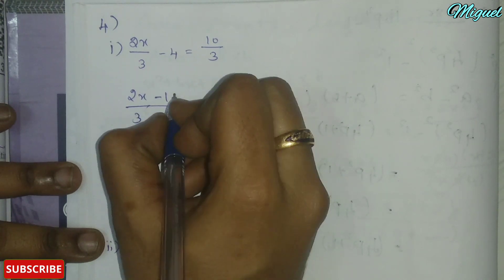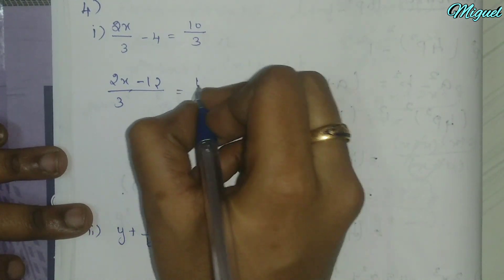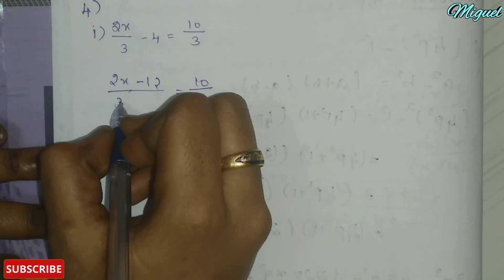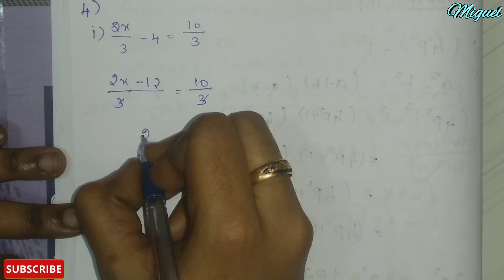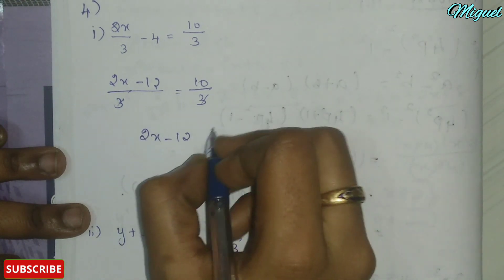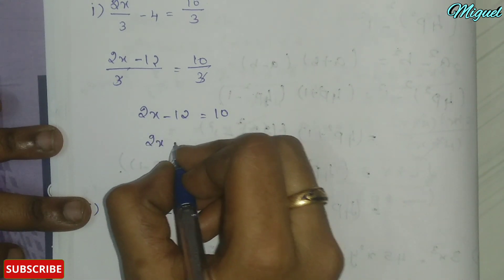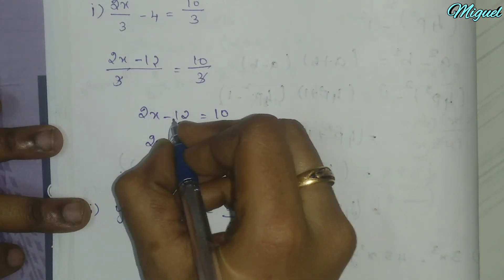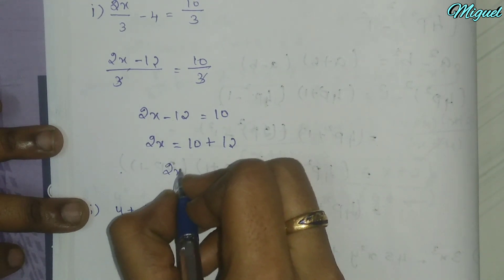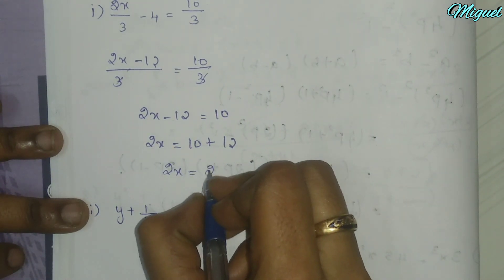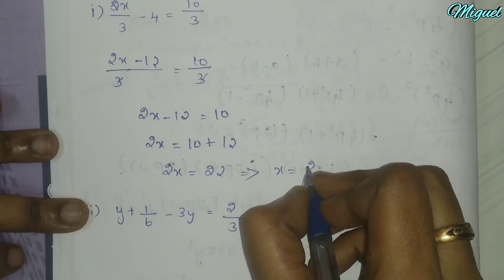Second problem: 2x minus 3 equals 10. Solving: 2x equals 10 plus 12, so 2x equals 22, giving x equal to 11.